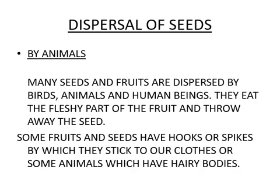Dispersal of seed by animals: many seeds and fruits are dispersed by birds, animals, and human beings. They eat the fleshy part of the fruit and throw away the seeds. For example, if you want to make lemonade, you squeeze the lemon and throw the seeds out. Sometimes these seeds land in soil and germination takes place, and a new plant grows. This is done by birds and animals as well.